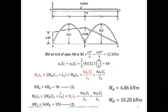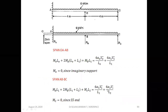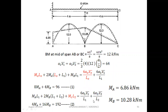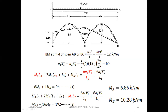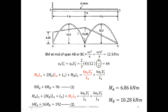Substituting into the O-A, A-B equation (with L1 = 4): 2MA·L1 + MB·L1 = 6A1x̄1/L1, giving equation 1. For A-B, B-C equation: MA·L1 + 2MB·(L1+L2) + MC·L2 = 6A1x̄1/L1 + 6A2x̄2/L2, giving equation 2: 4MA + 16MB = 192. Solving equations 1 and 2: MA = 6.86 kN·m and MB = 10.28 kN·m. Plotting the mu-dash diagram: MA = 6.86 at A, MB = 10.28 at B, MC = 0.